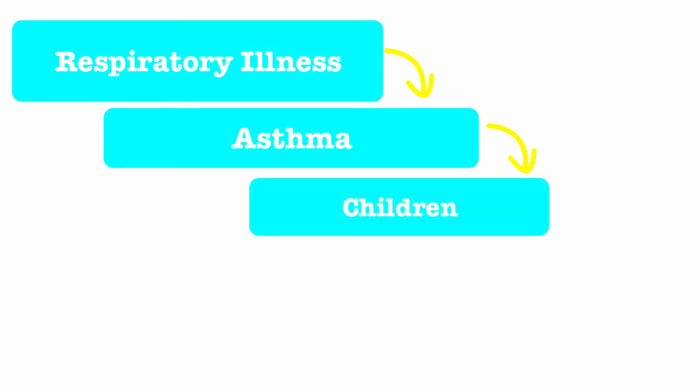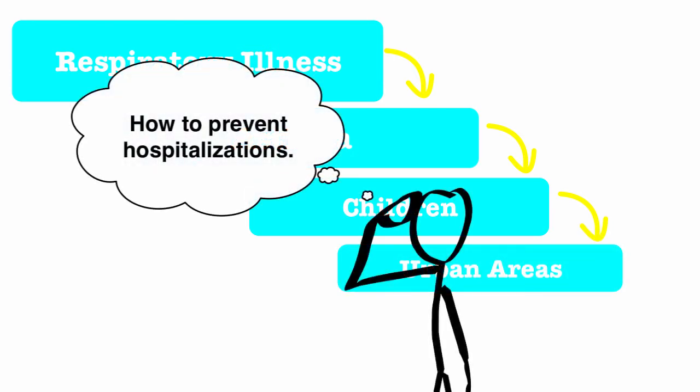For example, for the broad topic of respiratory illness, the restricted topic might be asthma. Then I might choose children as a group of people that are most affected by this issue. Then I could choose urban areas as my geographic area and the information that I want readers to have could be how to prevent hospitalizations.